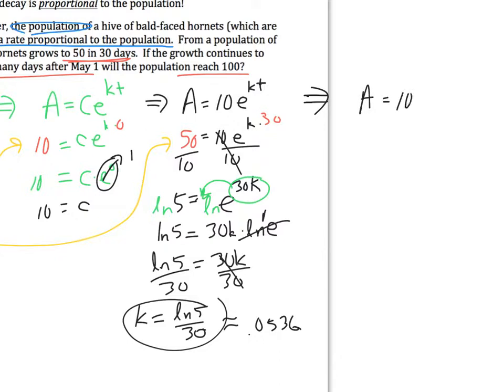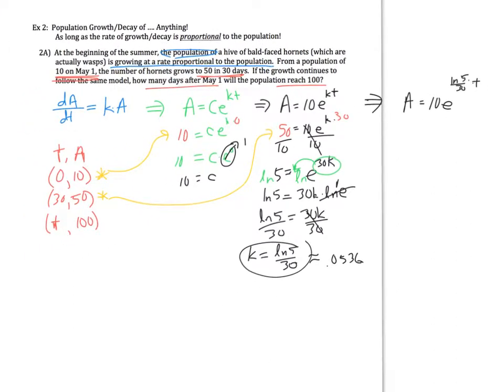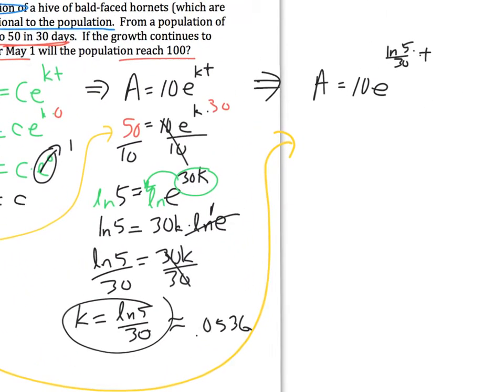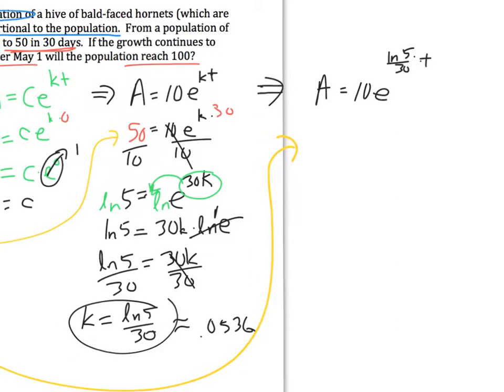I'm going to rewrite one more time. This time I have the actual equation I was looking for. My amount of population at any point in time is 10 times e to the k is natural log of 5 over 30 times time. There's my final equation. We're going to come over here and grab this information and plug it in.